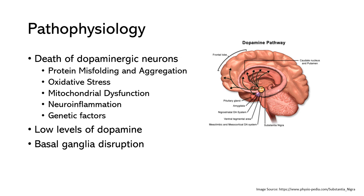Inflammation is the body's immune response to injury or damage. Chronic neuroinflammation can lead to the release of inflammatory molecules, activation of immune cells, and damage to dopaminergic neurons. It can be triggered by various factors, including alpha-synuclein accumulation, oxidative stress, and other factors, and can contribute to dopaminergic neuron death. While most cases of Parkinson's do not have a clear genetic cause, some genetic mutations have been linked to familial forms of the disease.